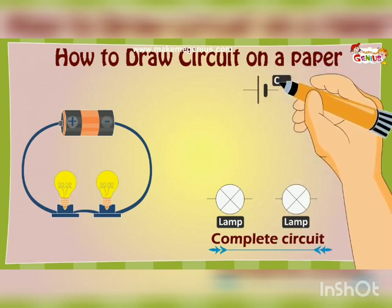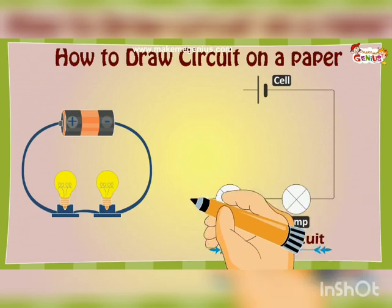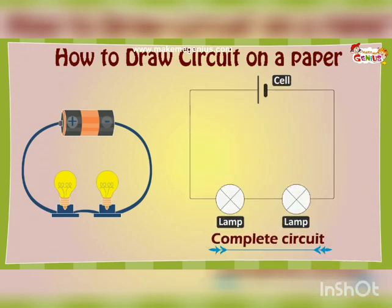And then the symbol for a cell is like this—just two lines. Now we need to draw lines to make a circuit. We draw straight lines which take turns at right angles. Now my circuit is complete. It looks so beautiful.